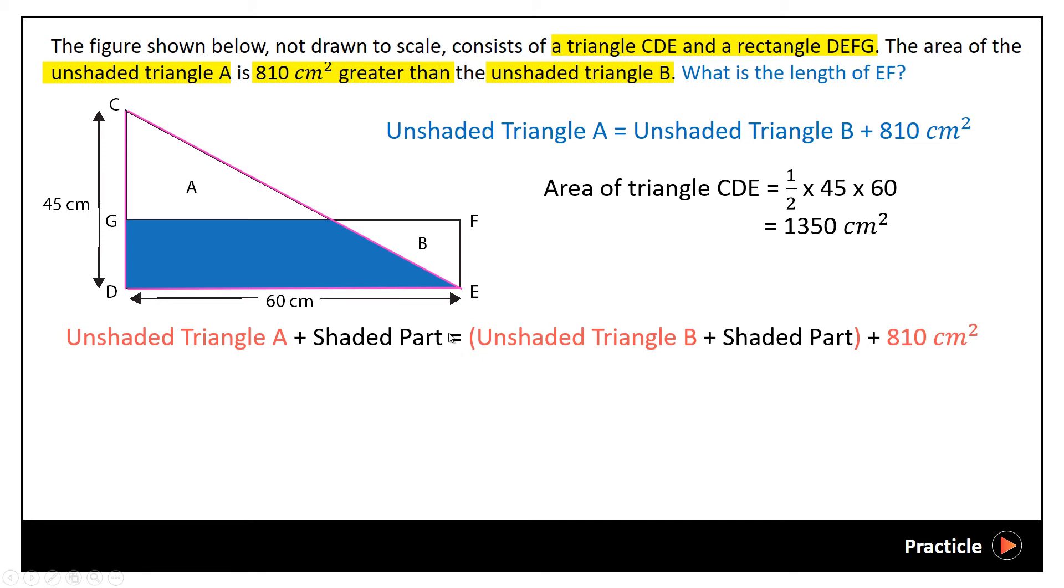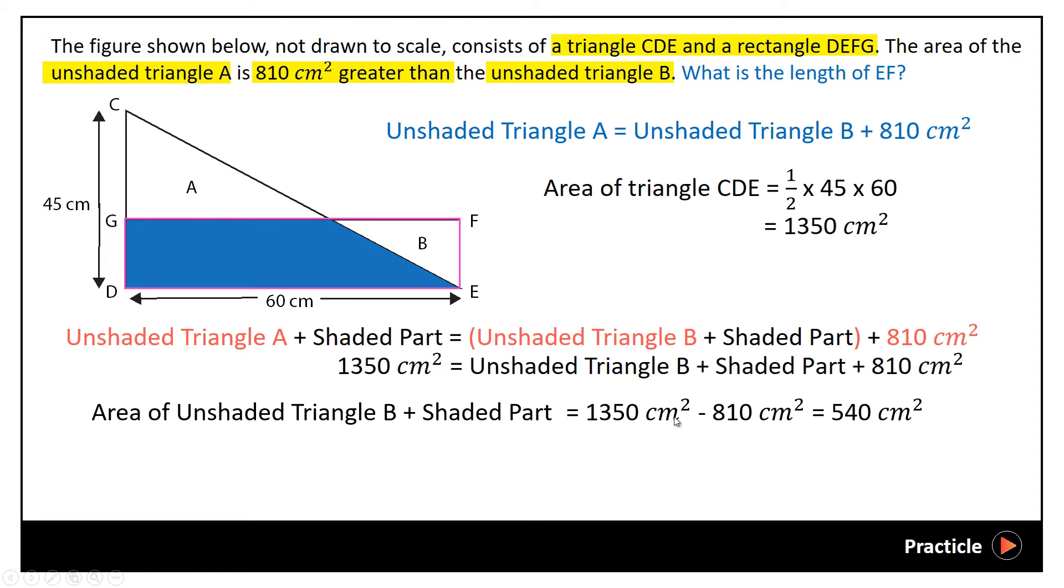So, since we have already found out this value earlier on, all we need to do is to add this value in. So, we'll have something like this. And this will be very helpful to us, because if we were to look at this, we realize that we can find the area of the unshaded triangle B plus the area of the shaded part by taking 1350 minus 810, which gives us 540 square centimeters.